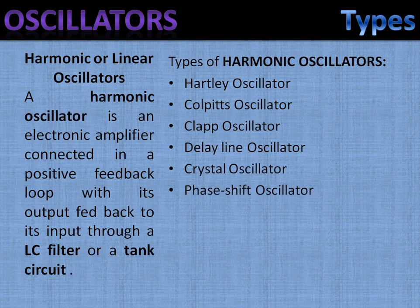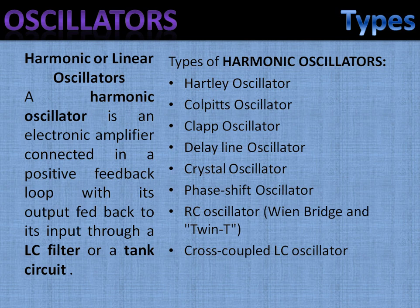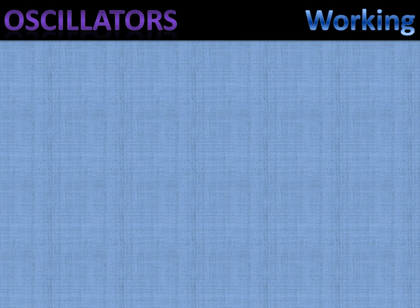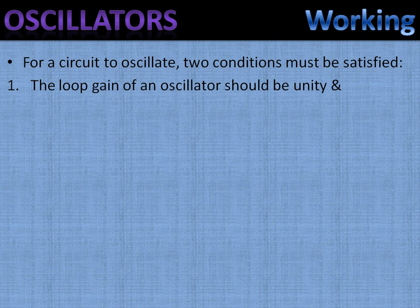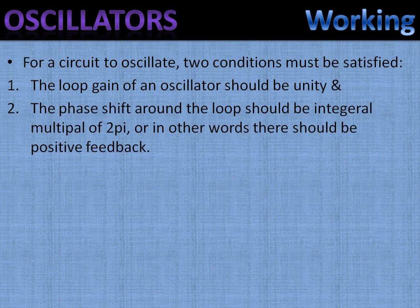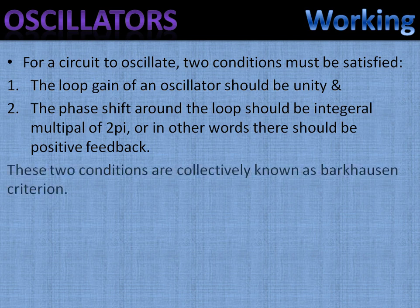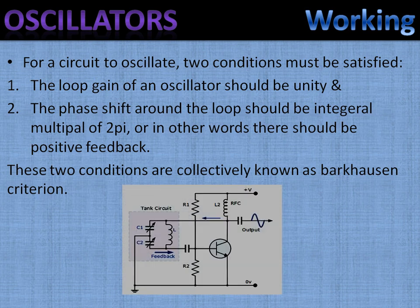Now let's see the working of the oscillators. For a circuit to oscillate, we need to satisfy two conditions: the loop gain of an oscillator should be unity, and the phase shift around the loop should be integral multiple of 2pi, or in other words there should be positive feedback. These two conditions are collectively known as Barkhausen criterion.